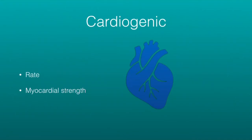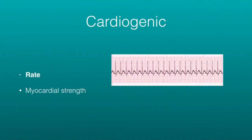Cardiogenic shock has two origins. One is because the rate has a problem, and the other is that the heart just can't beat strong anymore. With the rate, it can be too fast or too slow. If you see heart rates in the 180s or above, that's three times a second — just not enough time for the heart to fill back up. You could also have a heart rate that's too slow, like 20 or 30, and that won't be able to put out the needed cardiac output.